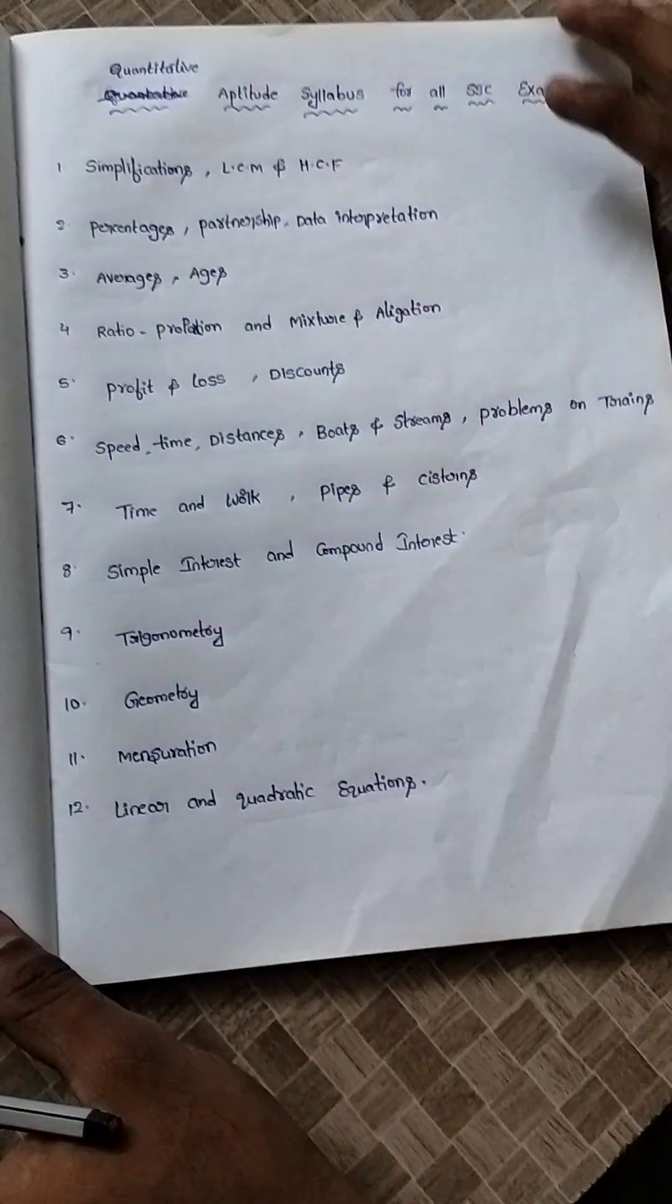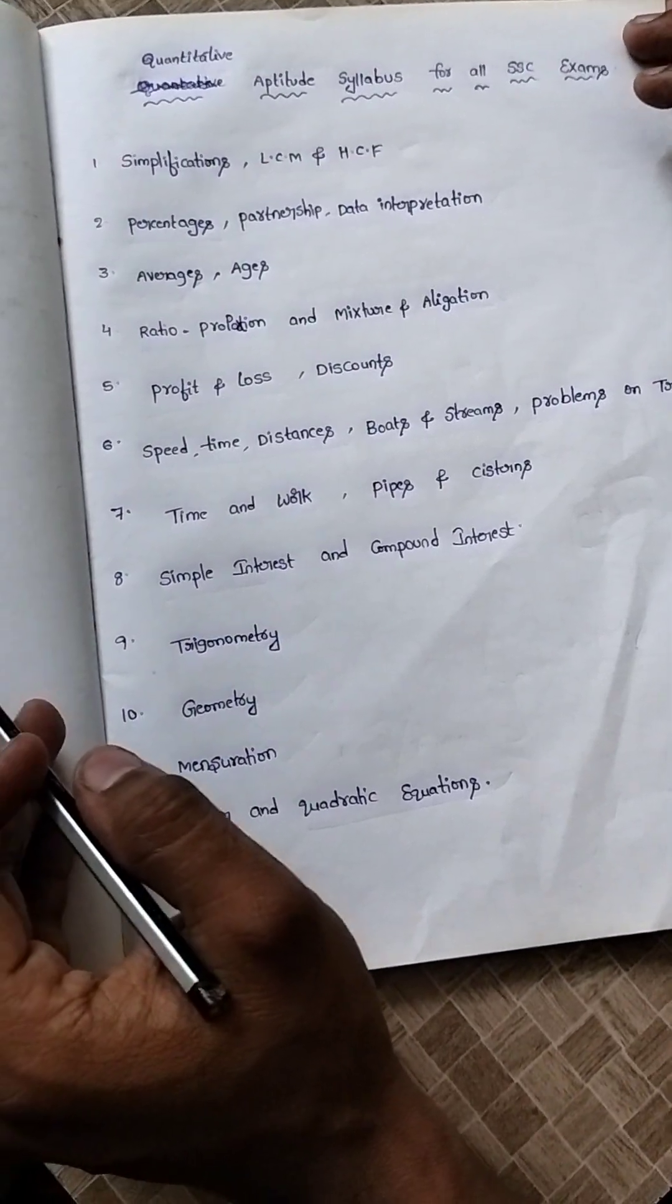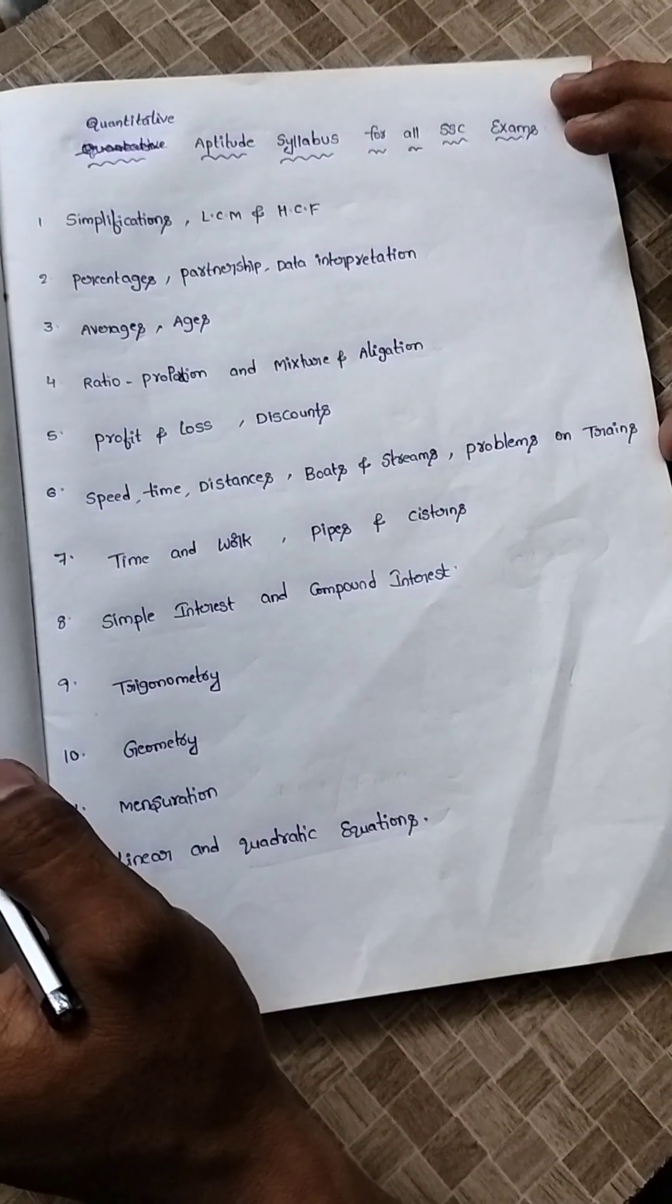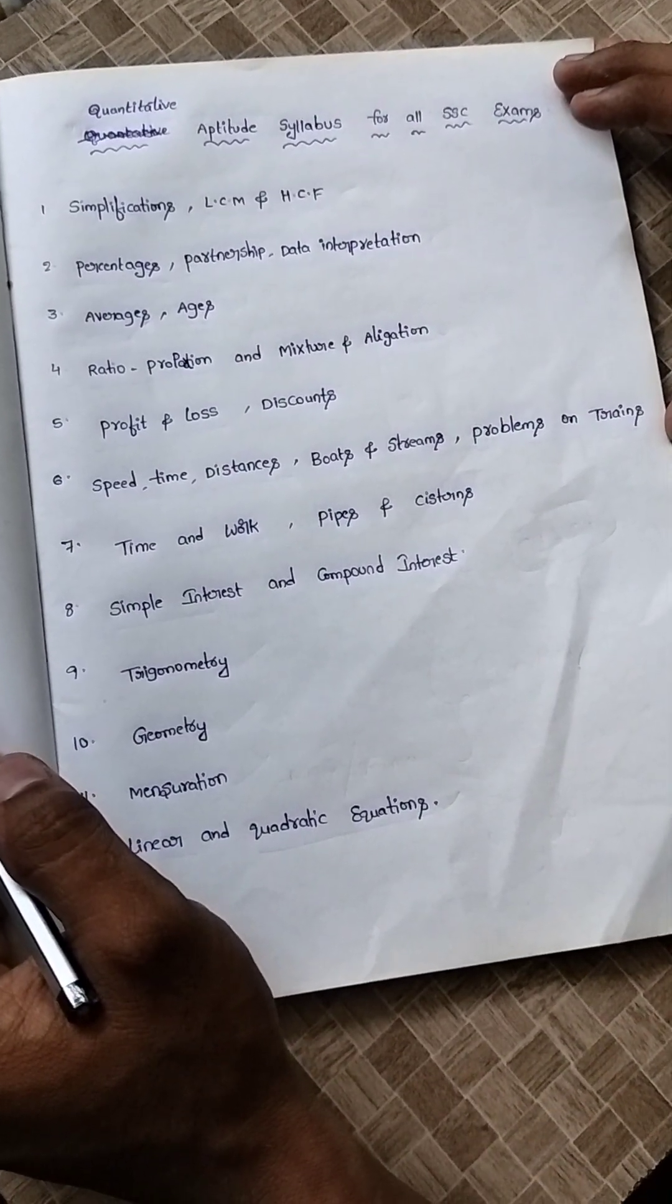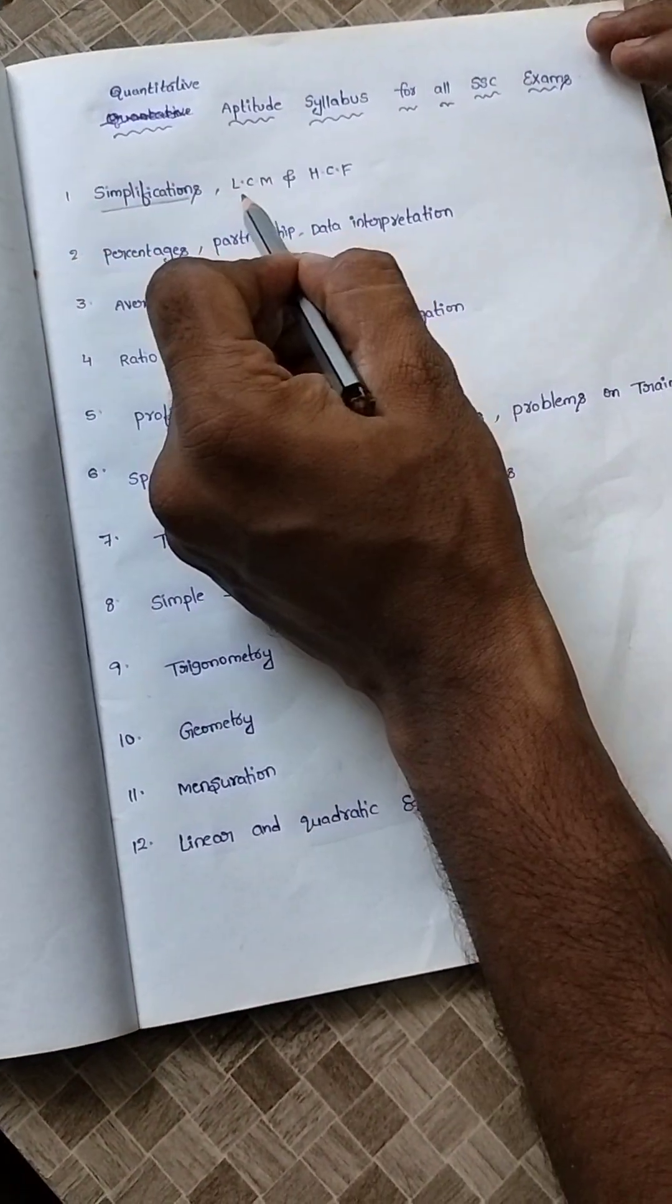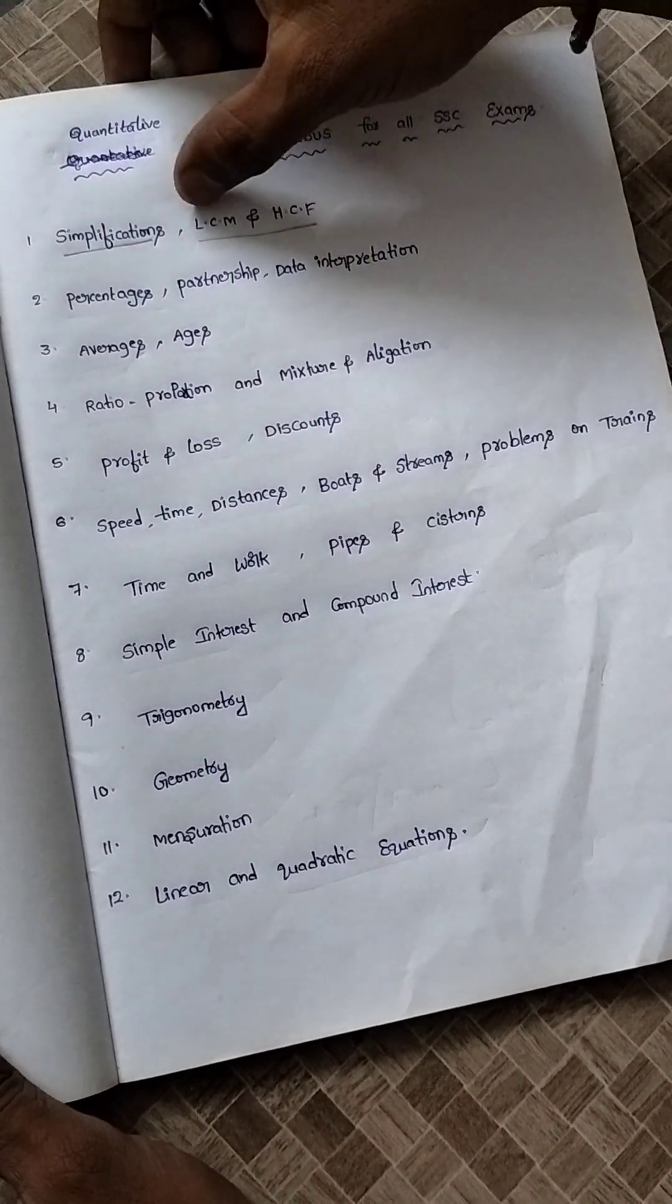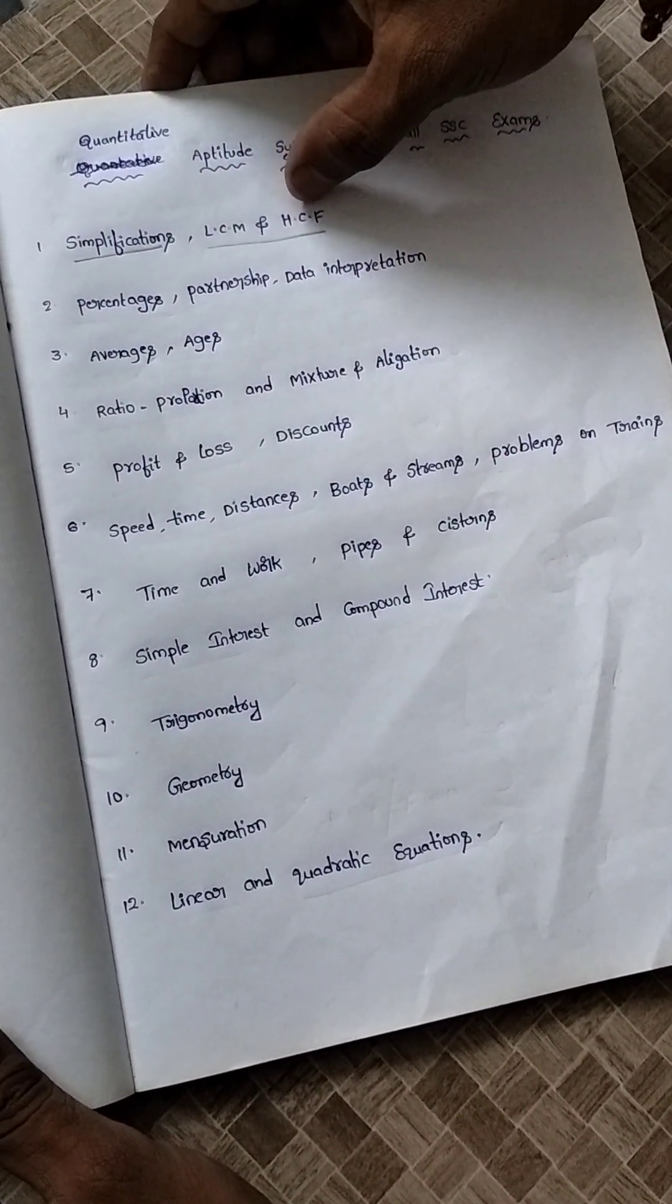This is the first topic, that is simplification. In this, BODMAS rules will come like division, multiplication, addition, subtraction. And after that, LCM and HCF problems, like least common multiple and highest common factor.